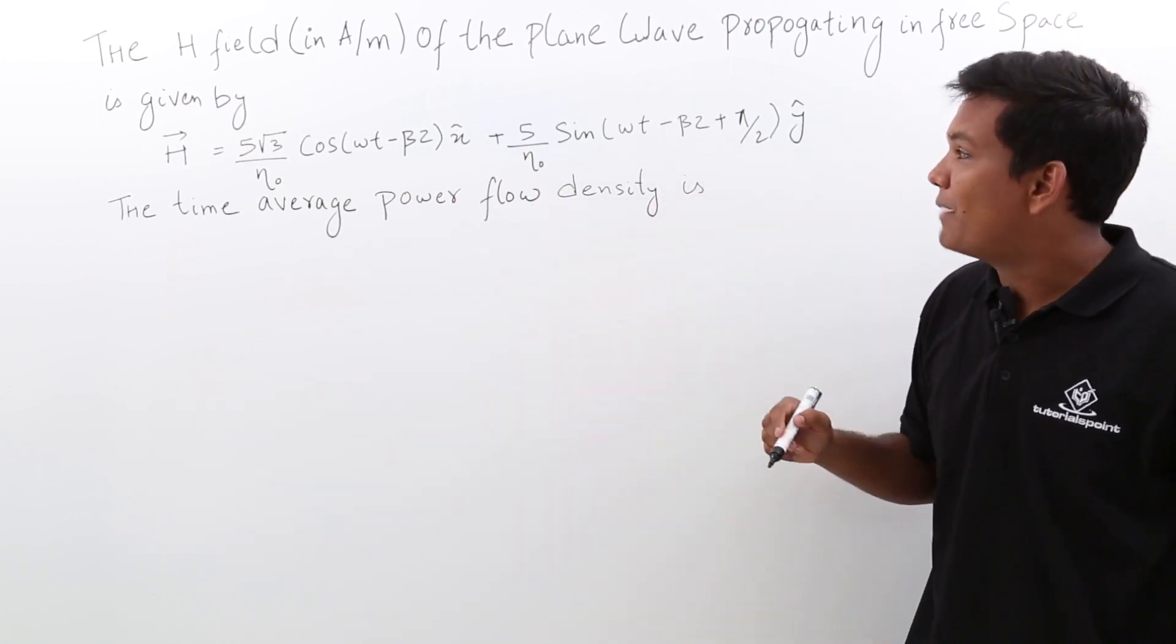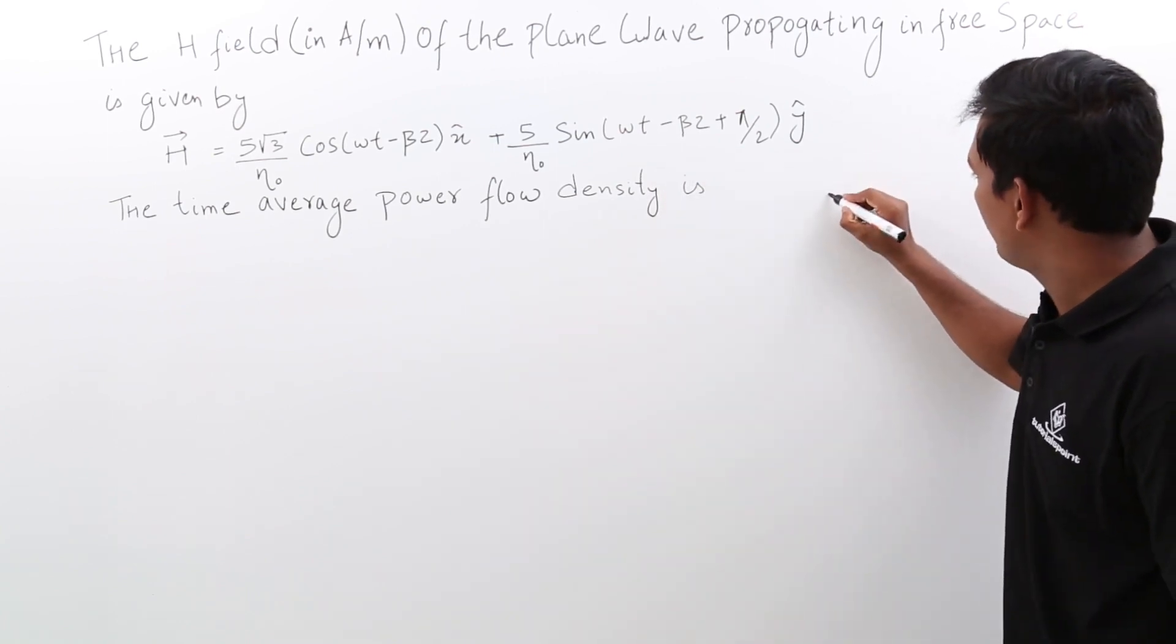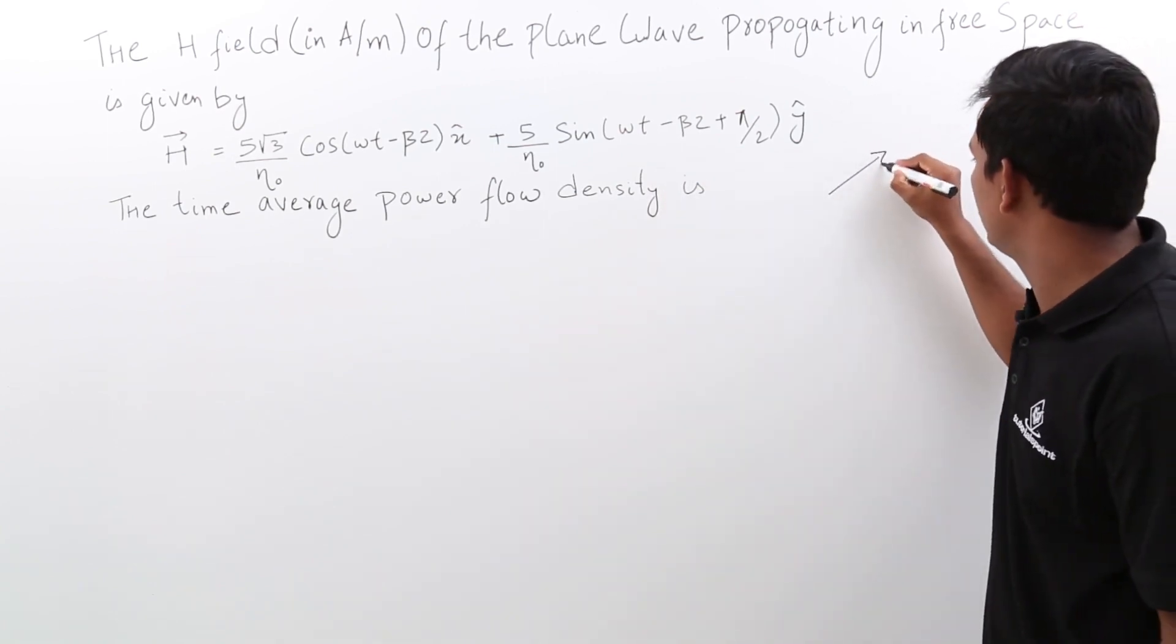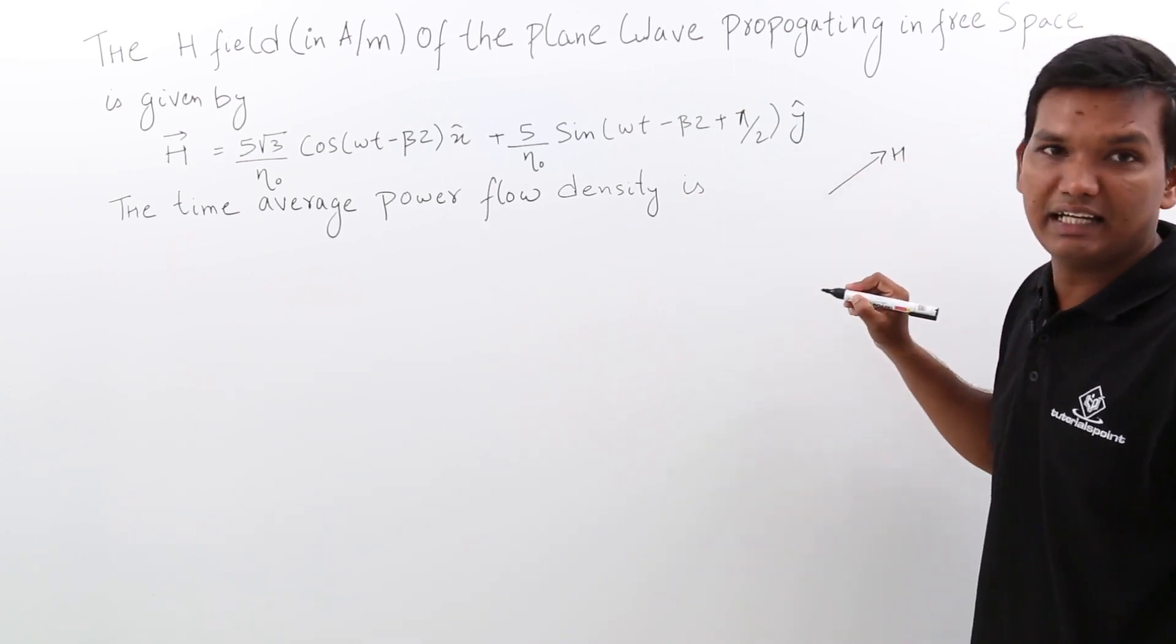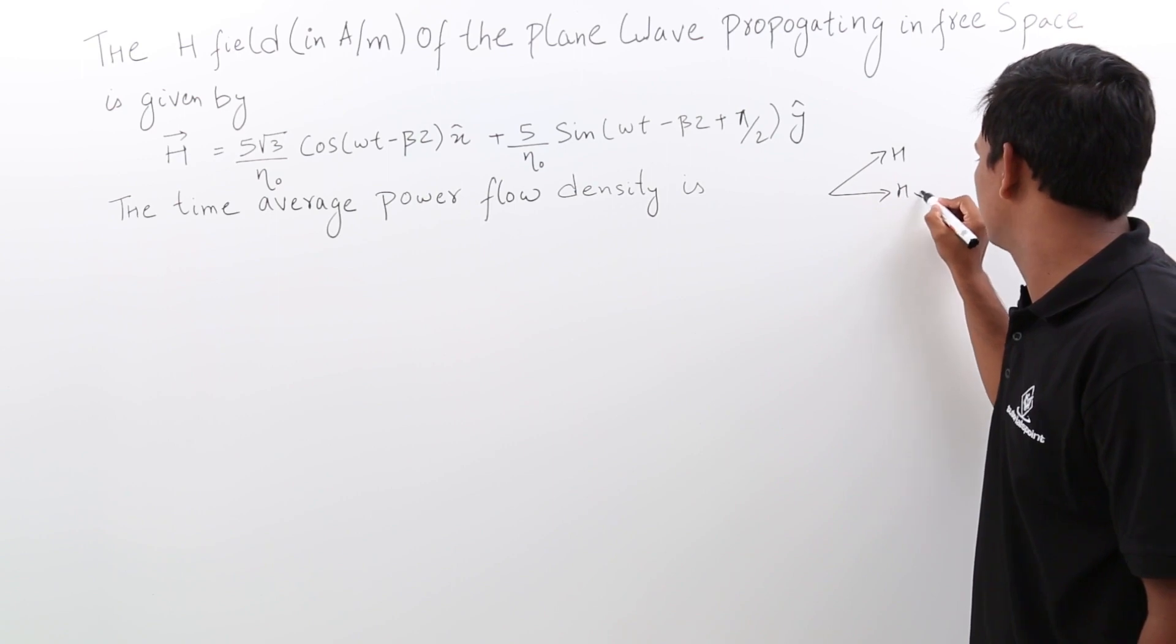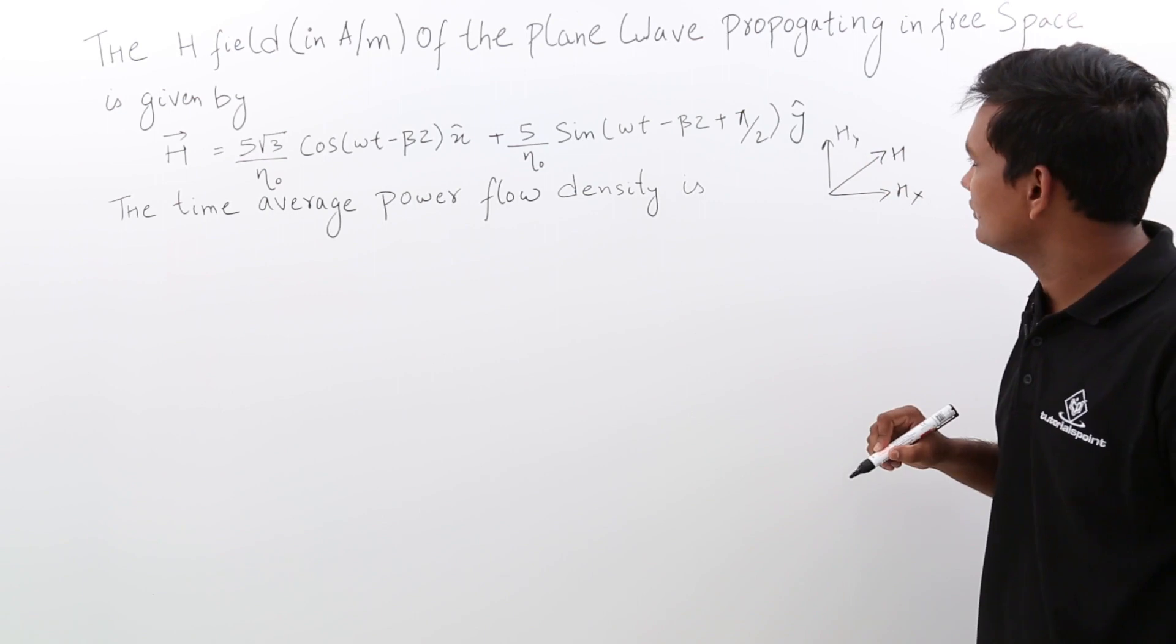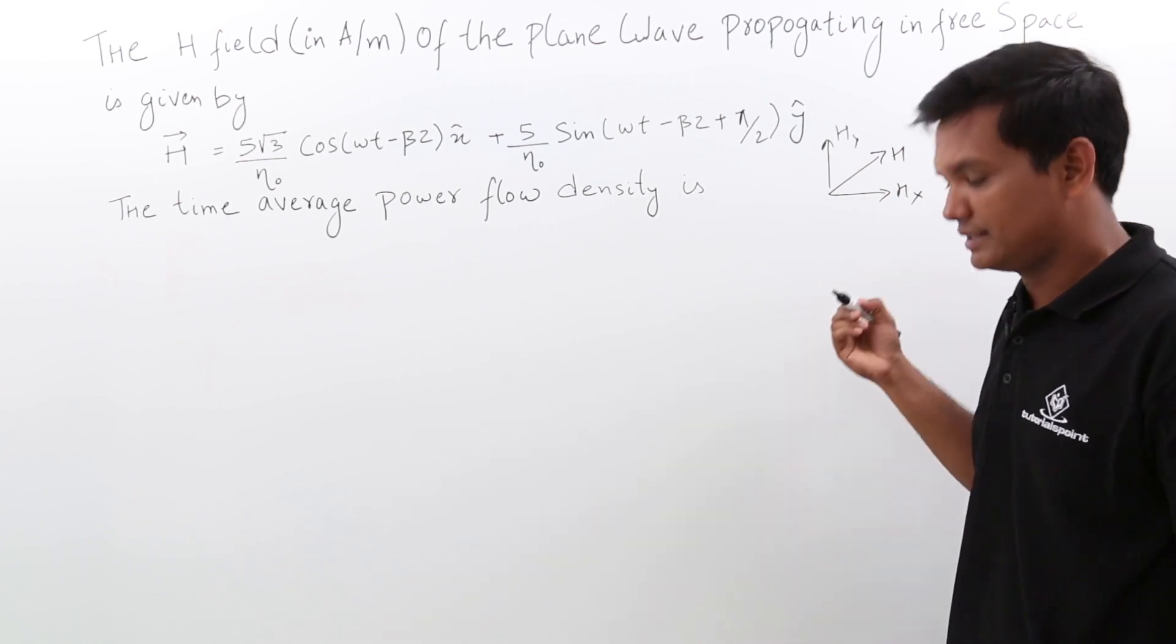Now, how is it possible that a magnetic field can have two components? It is only possible when your magnetic field, let's say H, is inclined to x and y axis, which would be like H x and H y. So, how to solve this problem? Let us see.